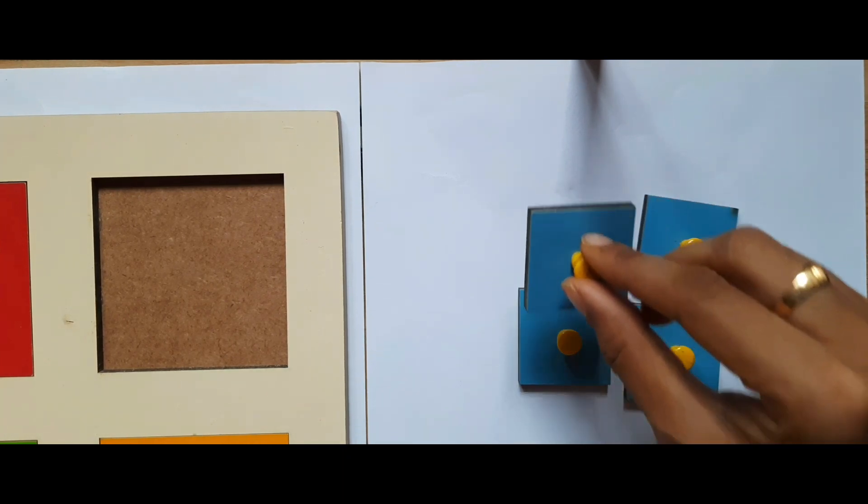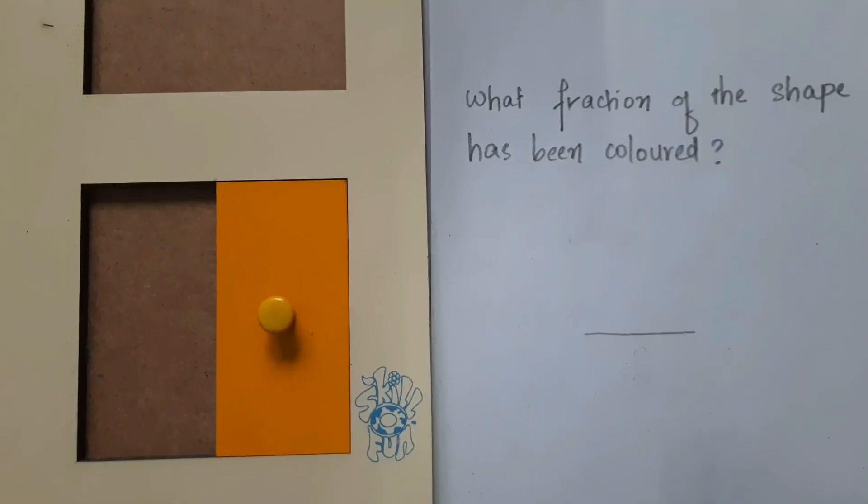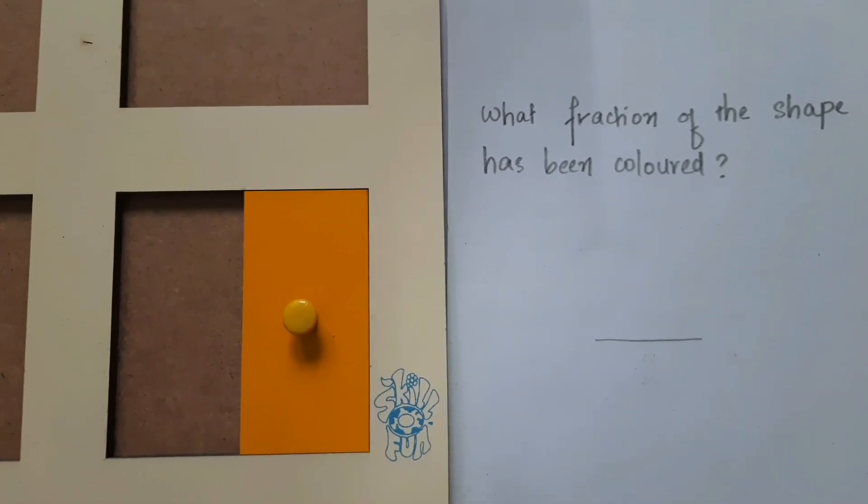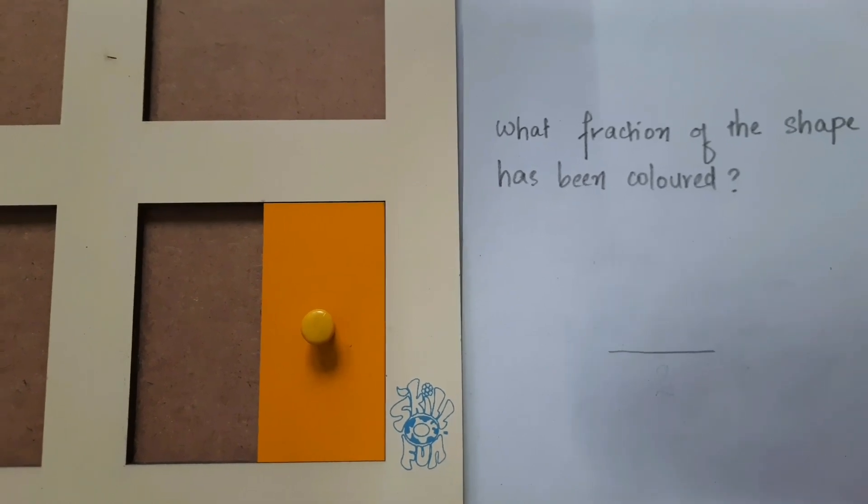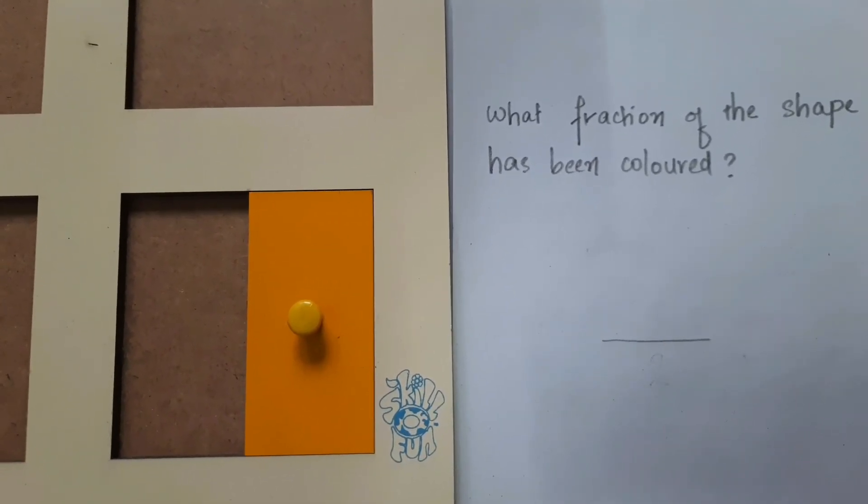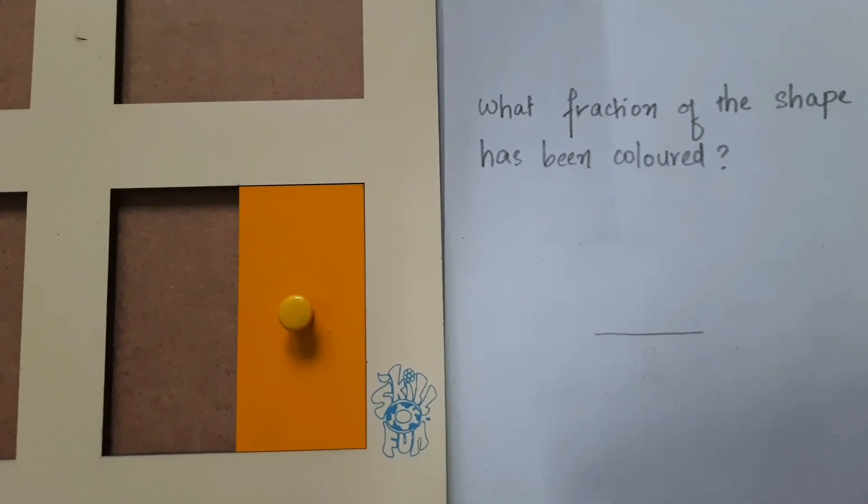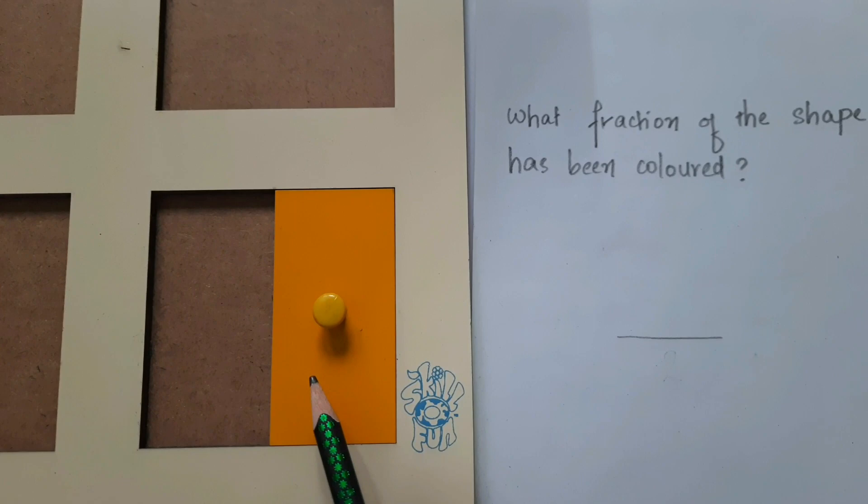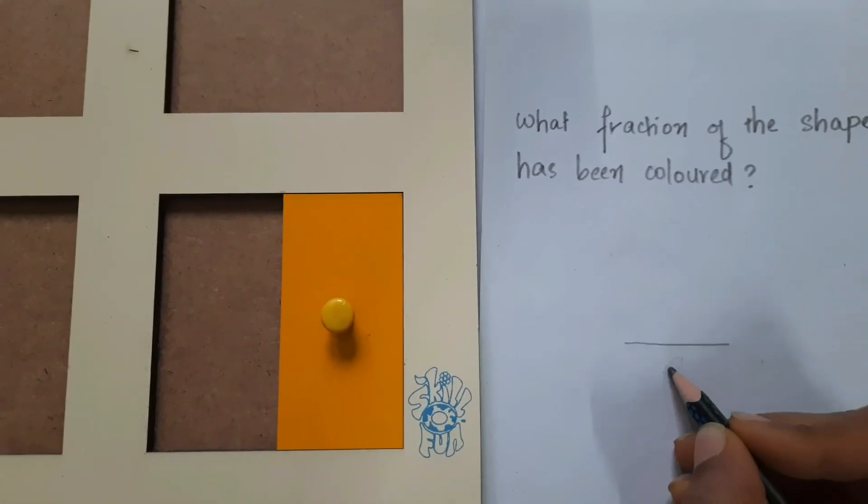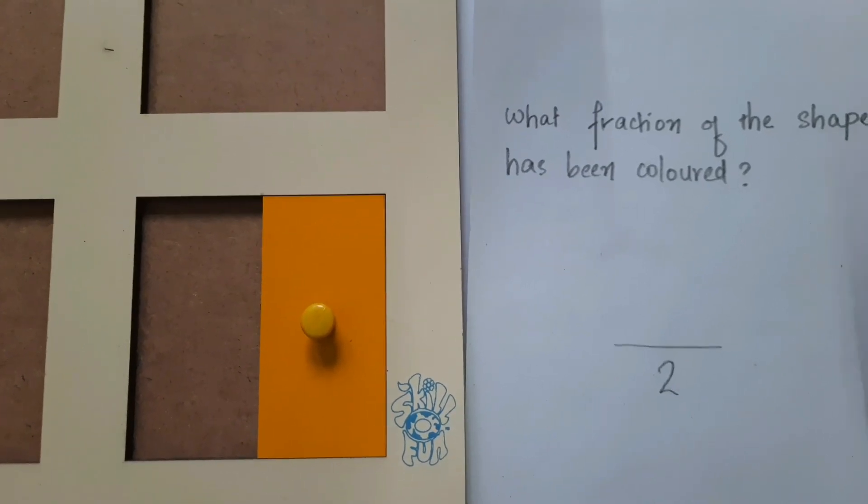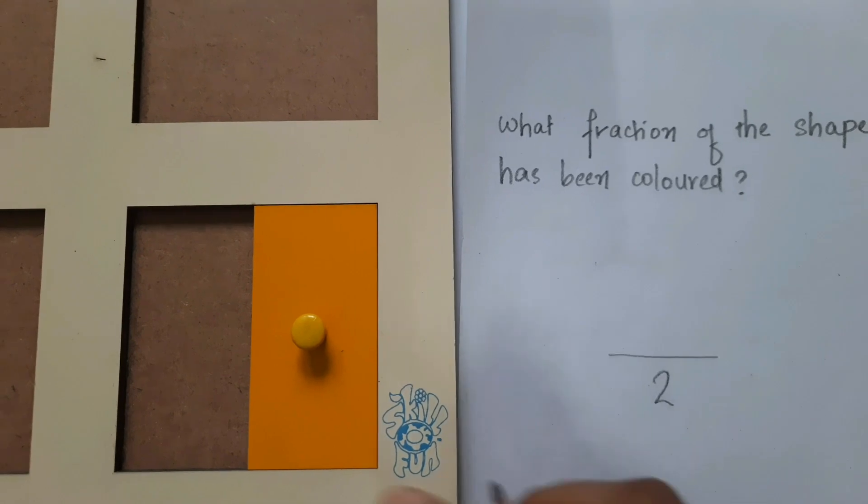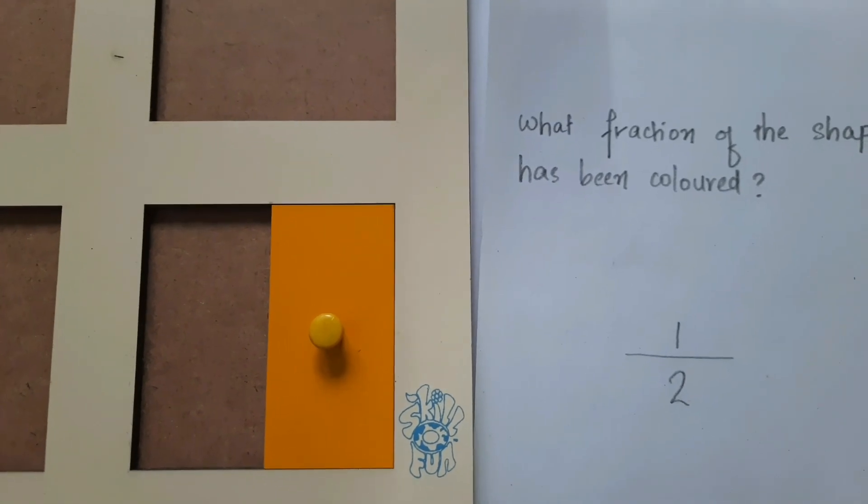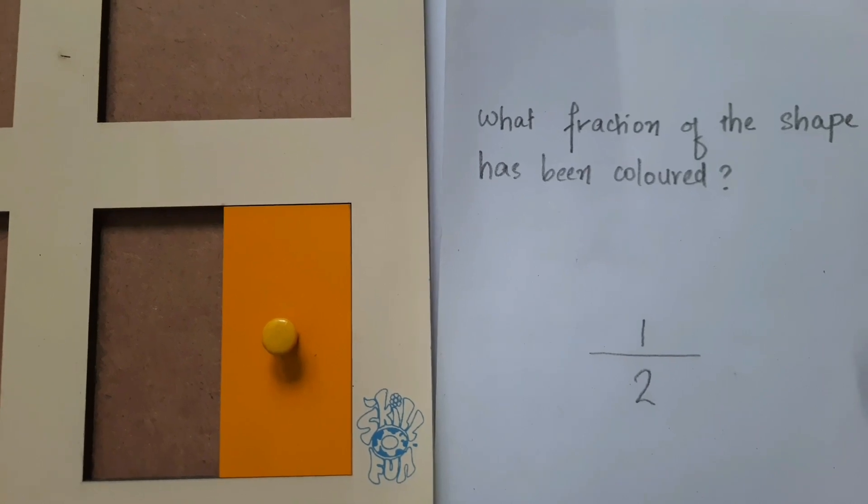What fraction of the shape has been colored? First, draw a line like this to differentiate the numerator and the denominator. The total number of parts is 1, 2—so the answer is 2. Now how many parts are colored? Only 1. So 1 is the numerator. The answer is 1 by 2—half of the square is colored.